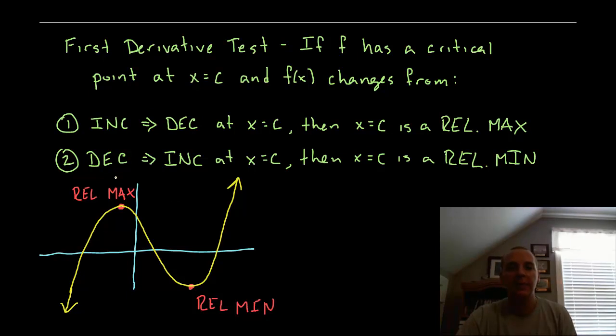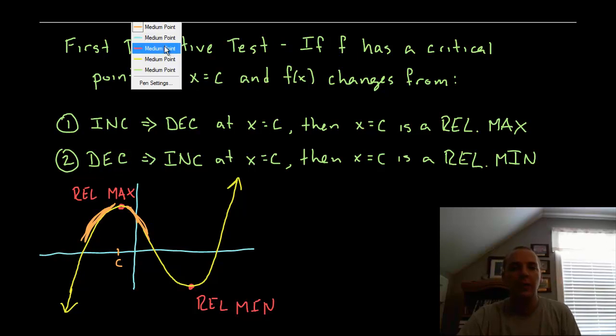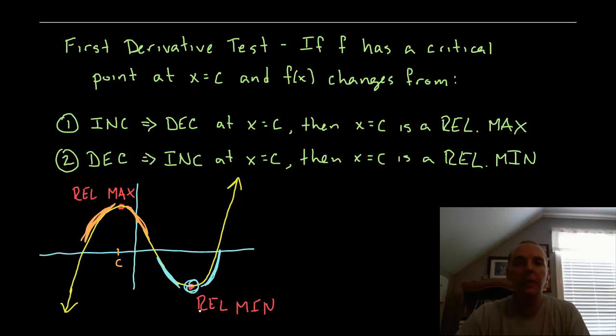And you can kind of see this in the picture here. You go from increasing before C to decreasing after C, you've got a maximum. Likewise, if you go from decreasing to your function being increasing, then the critical point in between those two will be at a relative minimum.